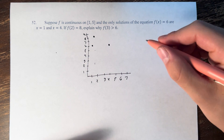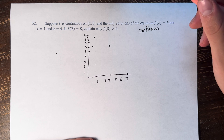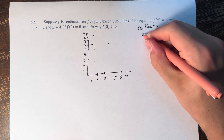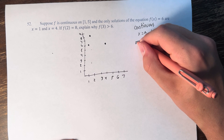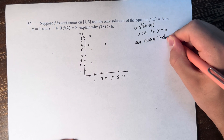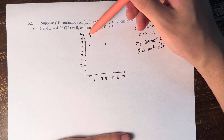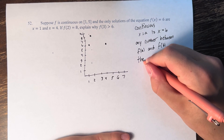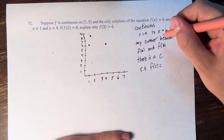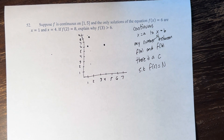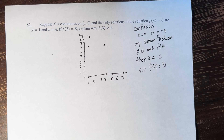The intermediate value theorem states: if a function is continuous over some interval — let's say from x equals a to x equals b — we know that if you pick any number between f of a and f of b, so any y value between the starting point and the ending point, there is a c such that f of c equals n.